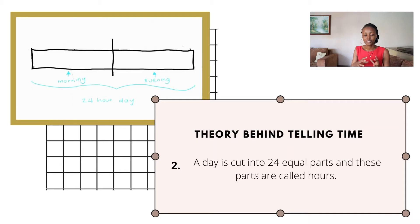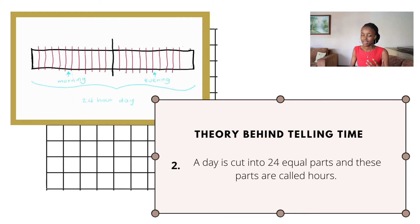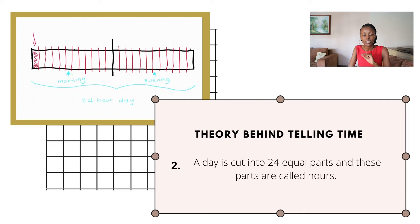You can even color these two parts of the day in different colors if you want to take it a step further. The second fact they need to know is that a full day is cut into 24 equal parts, and these parts are called hours. Help them understand that because a day is split into two, the morning takes up 12 hours and the evening takes up the other 12. Go to your visual aid and section the shape into 24 equal parts representing each hour of the day.